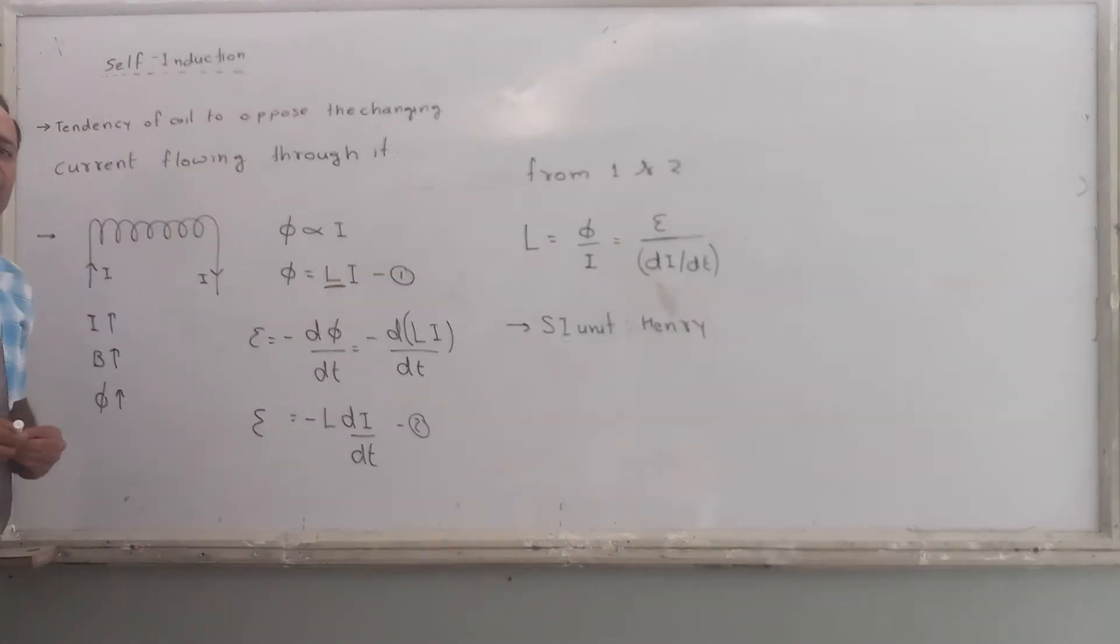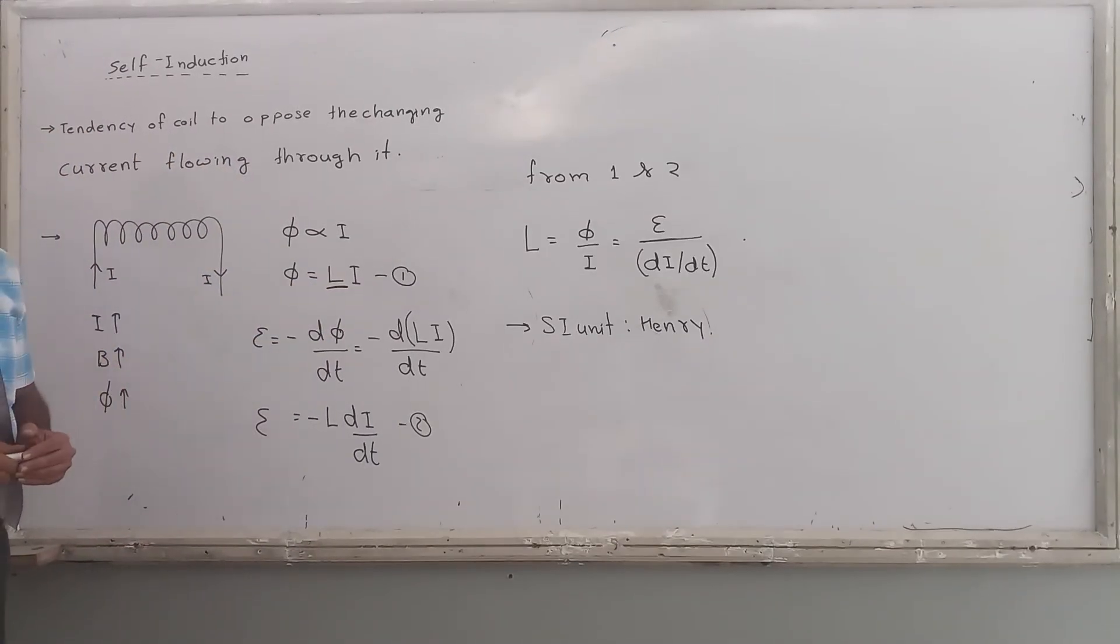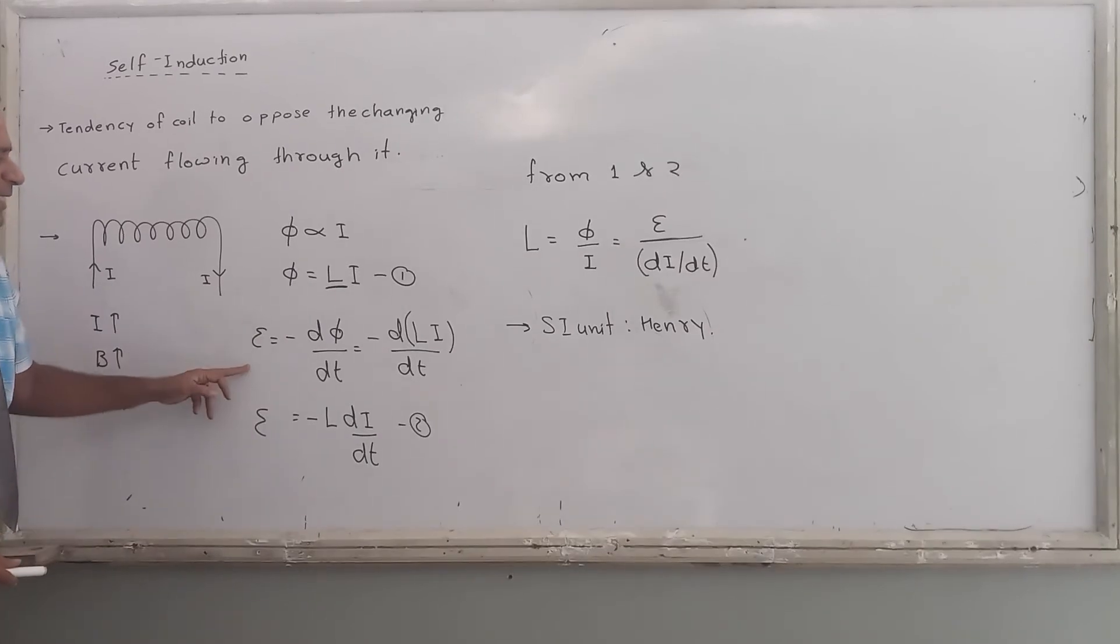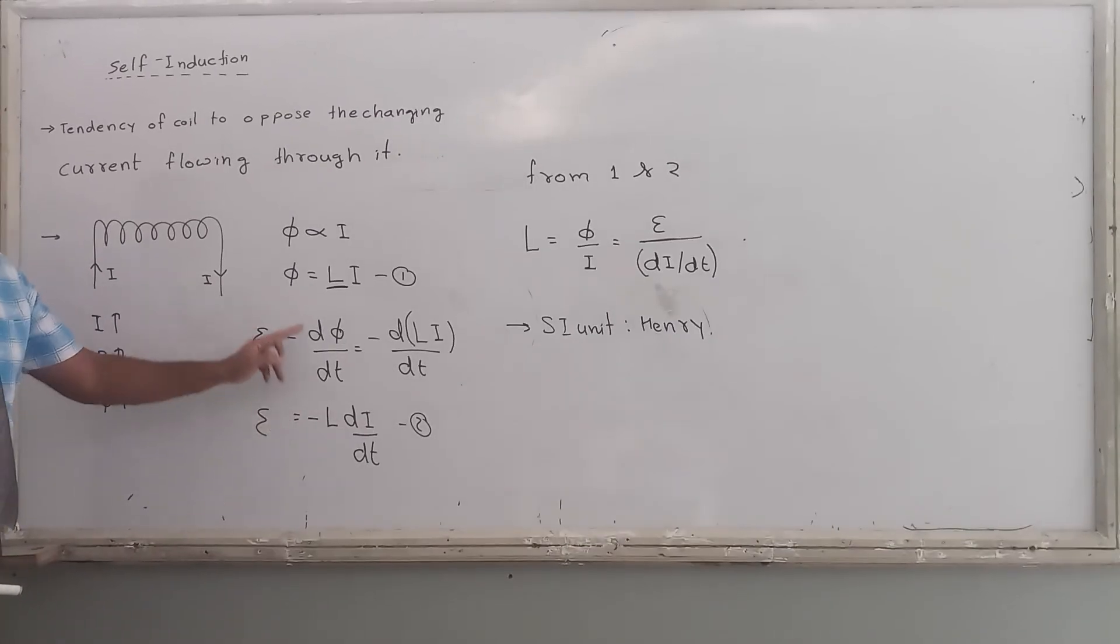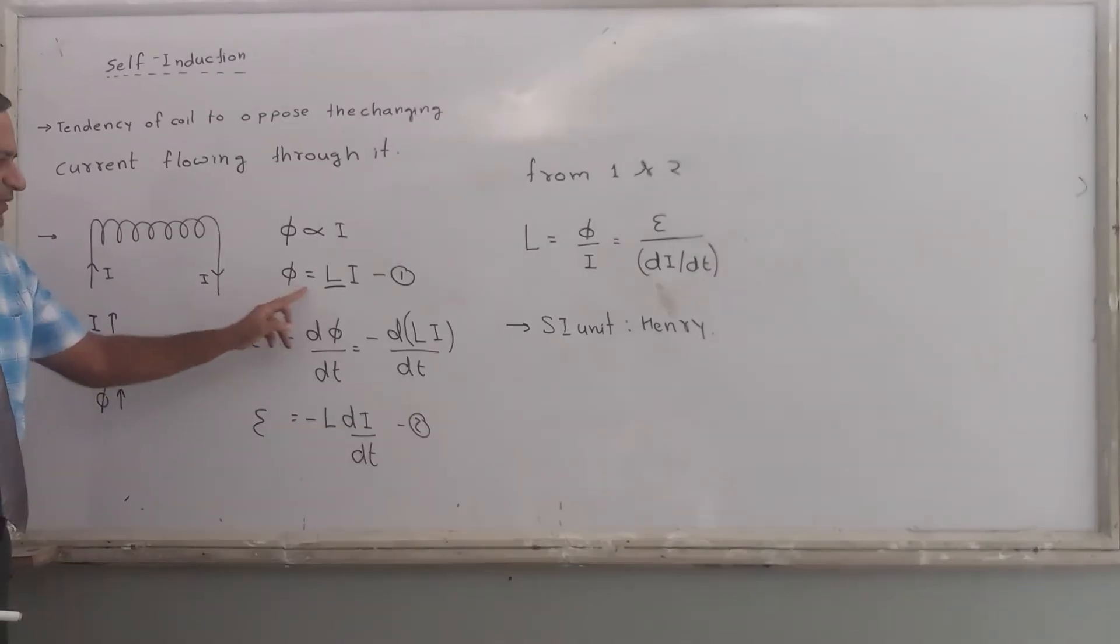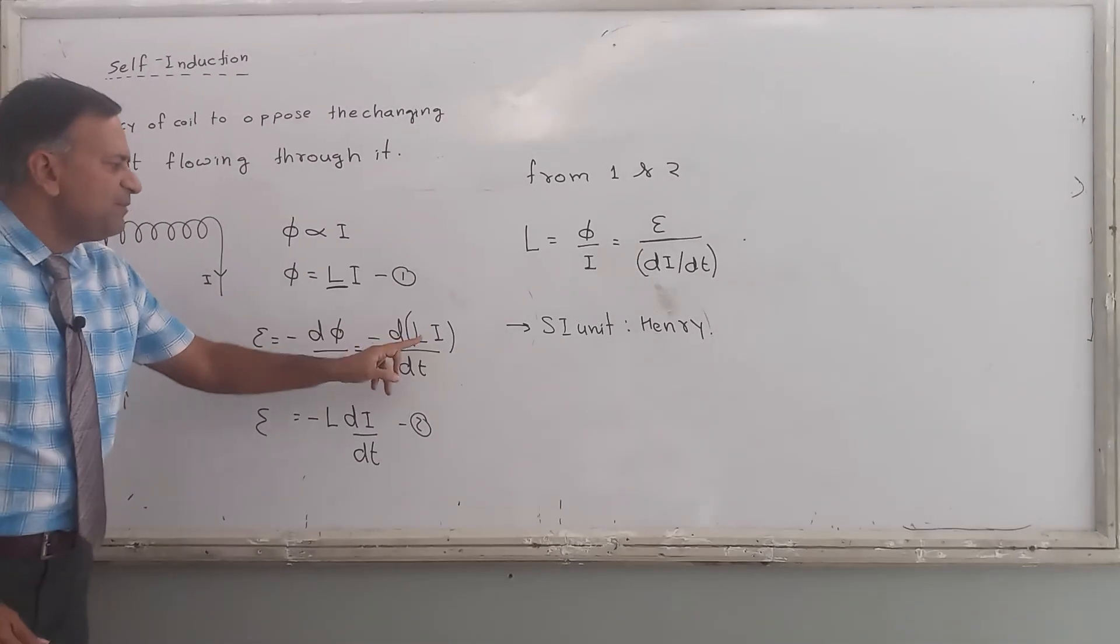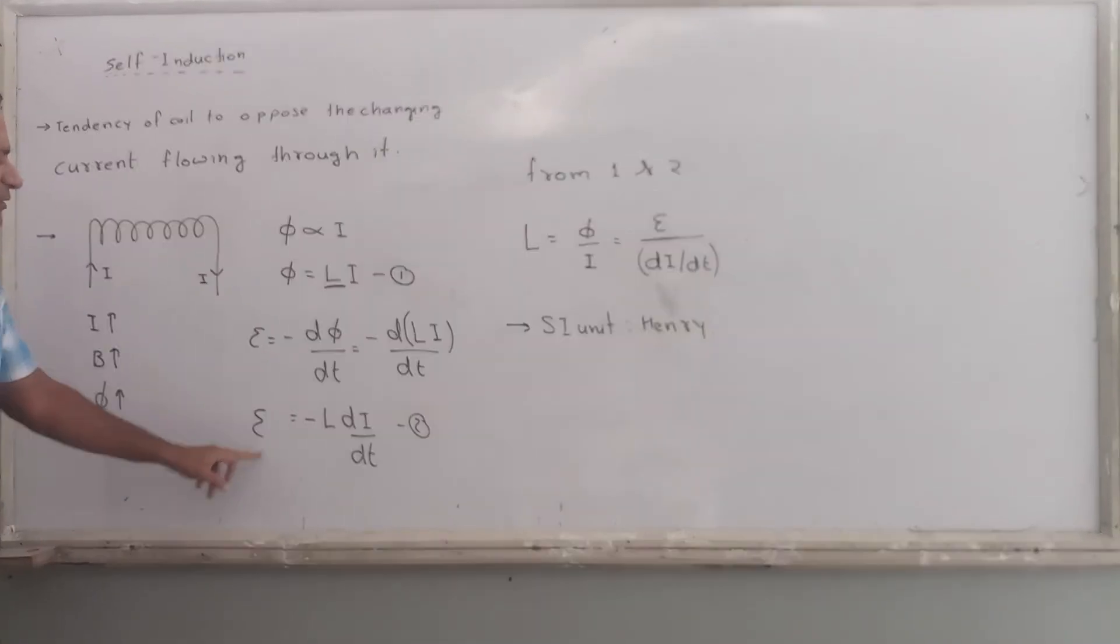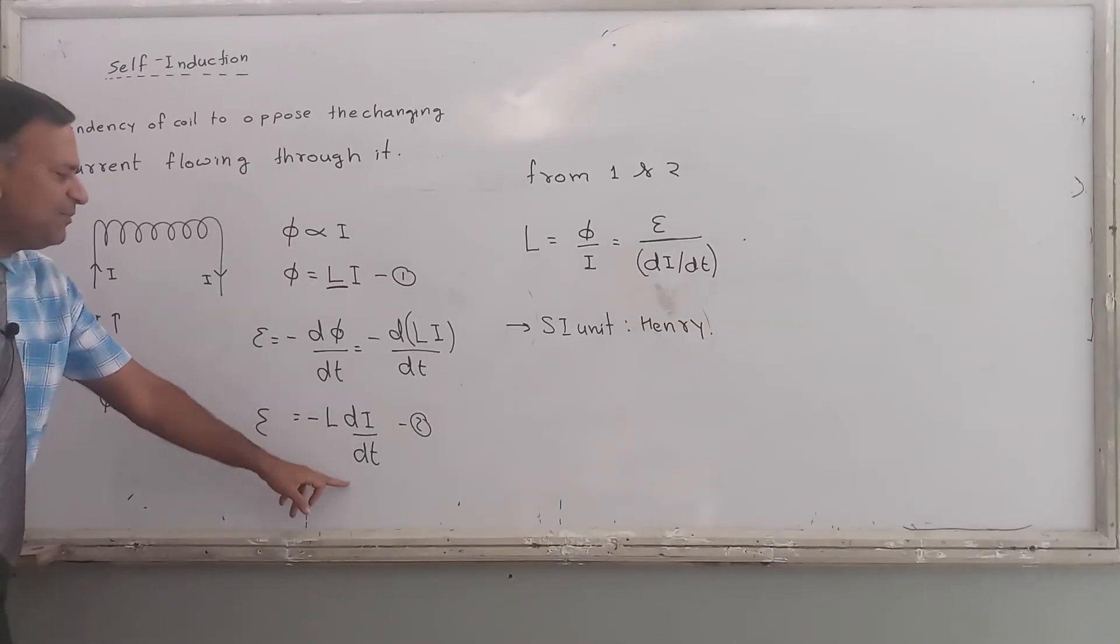Now, this L is known as coefficient of self-induction. There can be one more formula for this. Epsilon is equals to minus d phi by dt. This is Lenz's law. Put the value of phi from equation 1. Put the value of phi because L is a constant, L comes out. Epsilon is equals to minus L di by dt.